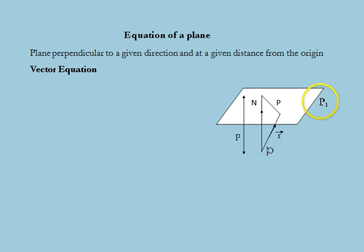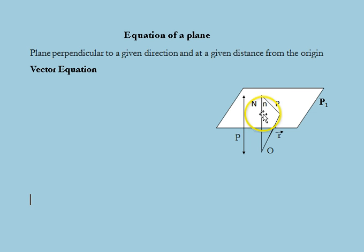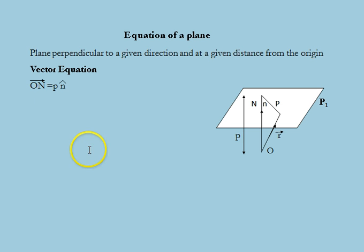Consider a plane P1 which is at a distance of P from the origin O, and let N be a unit vector perpendicular to the plane, directed away from O as shown in this figure. Let N be the foot of the perpendicular from origin O to plane P1. Then the vector ON is equal to P times unit vector N-cap. Now let P with position vector R be any point. P lies in the plane if vector NP is perpendicular to unit vector N, since N is perpendicular to every line in the plane.